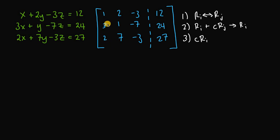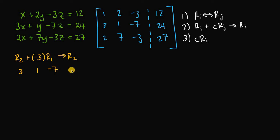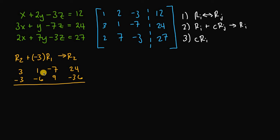The very first thing I want to do is try to get this 3 to be a 0. I can take row 2 and add to it negative 3 times row 1, and that will produce a new row 2. Row 2 is 3, 1, negative 7, and 24. Multiplying negative 3 times every element in row 1 gives negative 3, negative 6, positive 9, and negative 36. Adding these two rows together: 3 plus negative 3 is 0, 1 and negative 6 is negative 5, negative 7 and 9 is 2, and 24 and negative 36 is negative 12. So this becomes our new row 2.